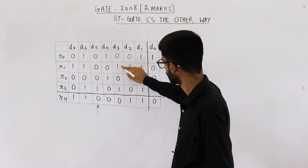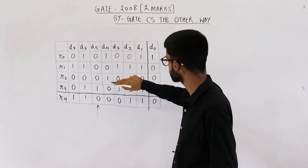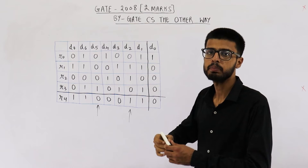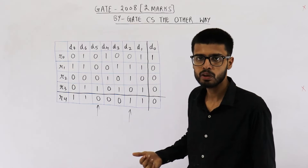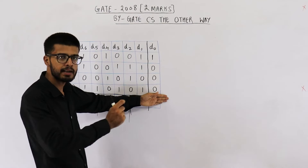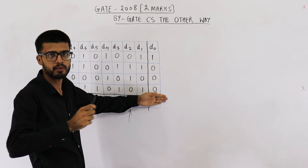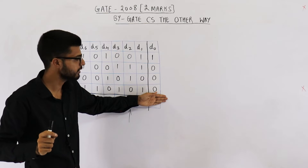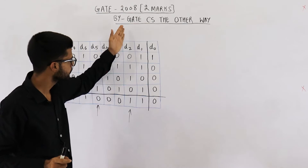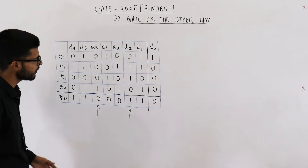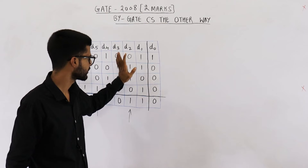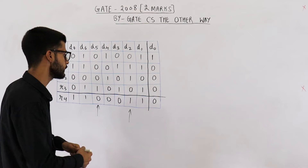In D4 we have two ones — two is even, so that's acceptable. But in D2 there will be an error because we have three ones. The parity bit is added such that the total number of ones becomes even. The sender might have seen only two ones in D2, so the parity bit would be zero. But the receiver is getting one — meaning some bit got flipped. Similarly, in D0 we have only one one, so there will also be an error there.